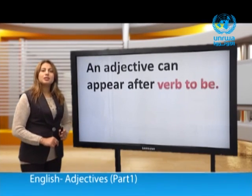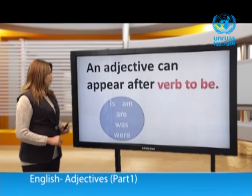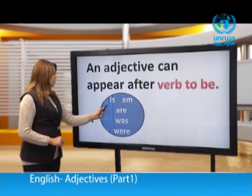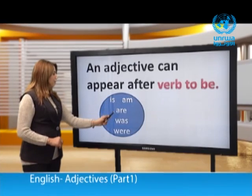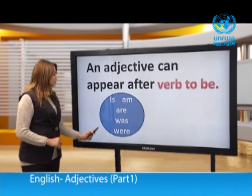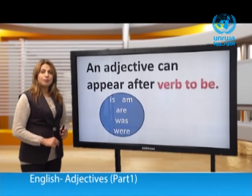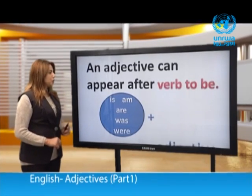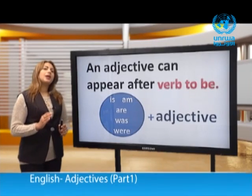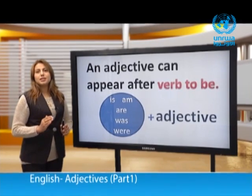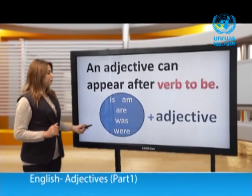The adjective comes after verb to be. Verb to be includes: is, am, are in the present, and was and were in the past, followed by the adjective.